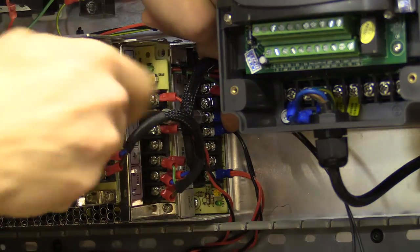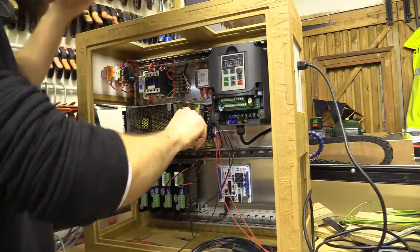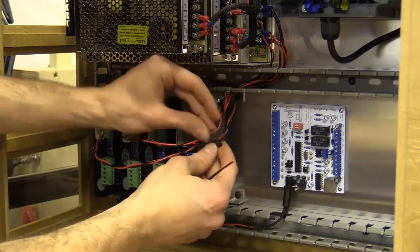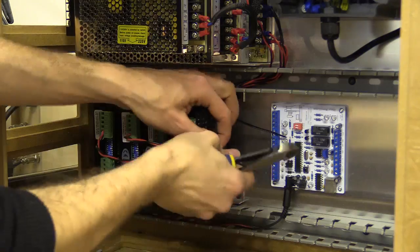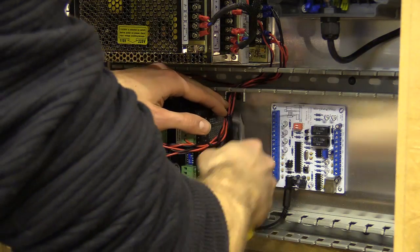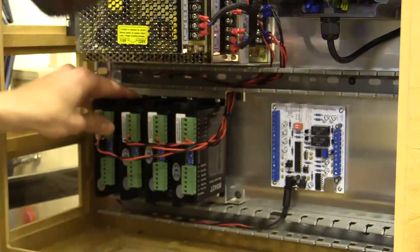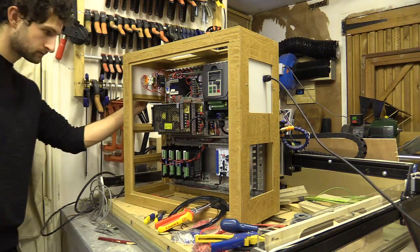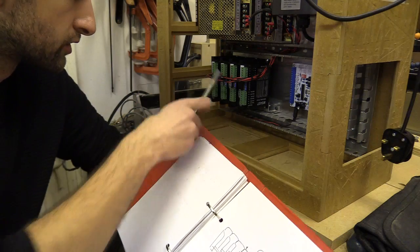In the last video I powered all the different components in the enclosure. This included the stepper drivers, the driver board, the variable frequency drive, and the 12, 24 and 36 volt power supply units, all via the motor contactor unit which has a nice on and off button. In this video I'm going to start wiring stuff to the control board, starting with the stepper drivers.